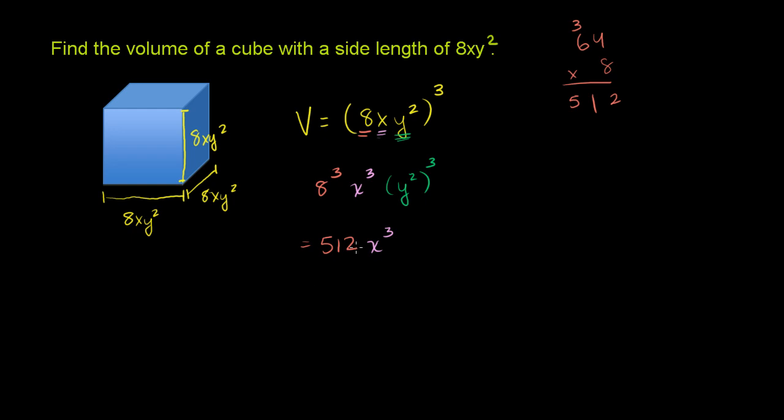and y squared to the third power—that's the same thing as y to the 2 times 3 power, or y to the sixth power. And we're done. We found the volume of the cube: 512 x to the third y to the sixth.